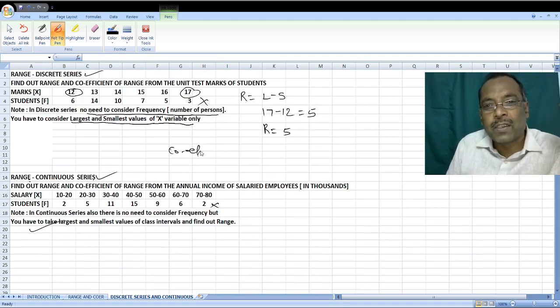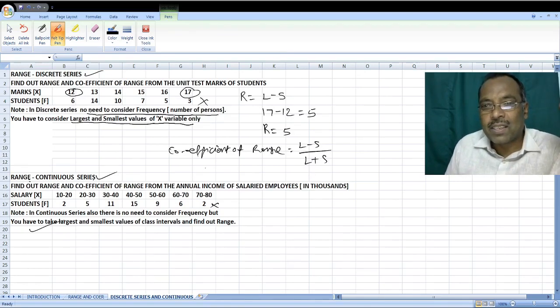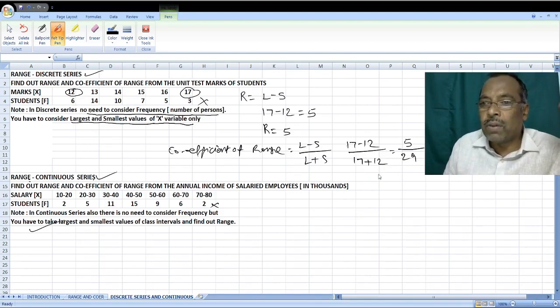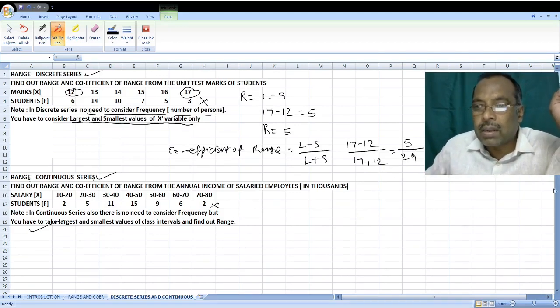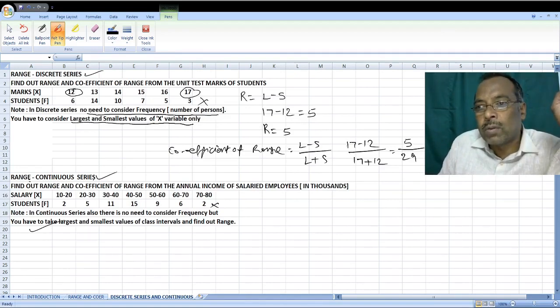When you come to Coefficient of Range, what is the formula? L minus S divided by L plus S. And that comes to 17 minus 12 divided by 17 plus 12. That comes to 5 divided by 29. If you divide that, 5 divided by 29 is equal to 0.172. This is equal to 0.172. That is the answer.